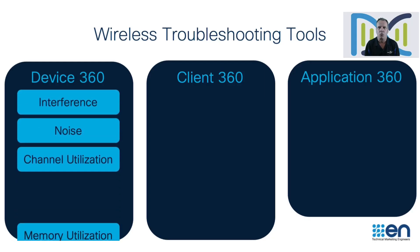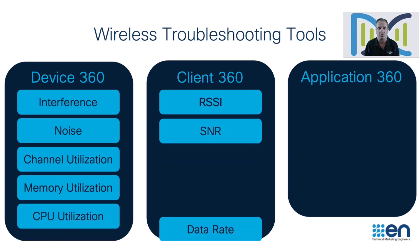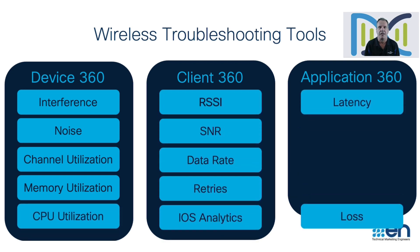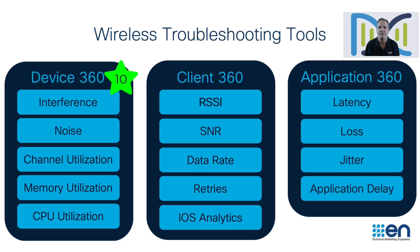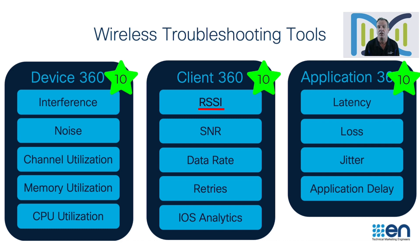Cisco DNA Center is an incredible tool for troubleshooting wireless networks. It does this by assigning a health score to network devices, clients, and applications. It calculates these health scores by using various key performance indicators, or KPIs. Examples of KPIs include things like interference or noise, a client's signal strength, or their signal-to-noise ratio, or on the application side, things like latency, loss, and jitter.